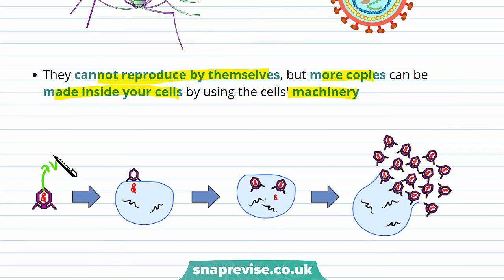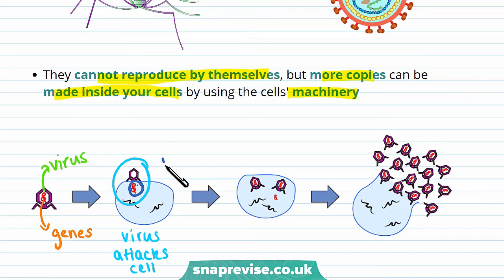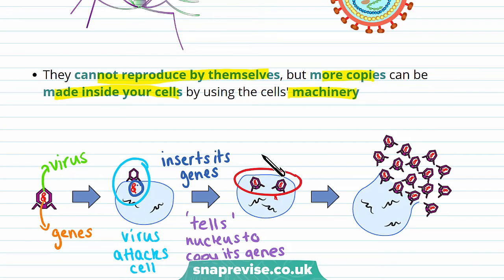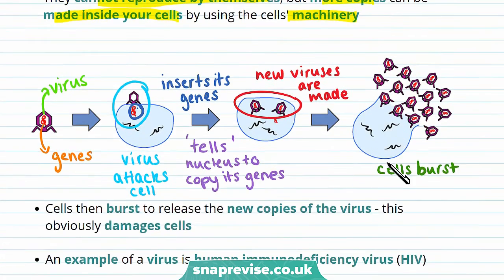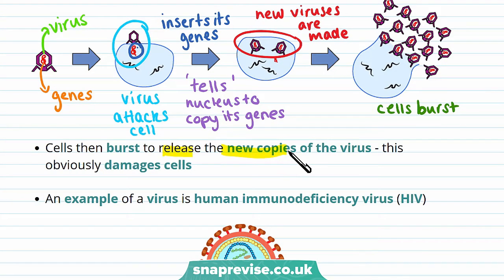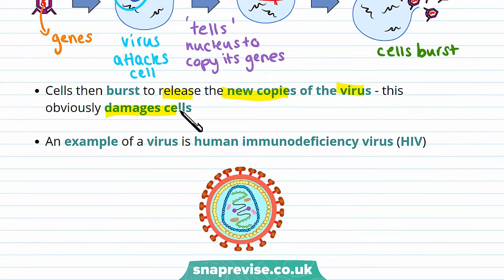Now let's look at the stages of viral replication. This is a virus, and you can see that it contains genes. The first stage is when the virus attacks the cell. It then inserts its genes. The virus then tells the nucleus to copy its genes. After this, new viruses are made. After enough copies of the virus are made, the cells burst to release the new copies of the virus. This cell damage is what makes you feel ill.